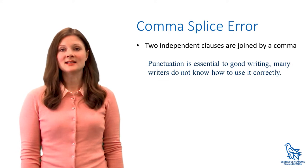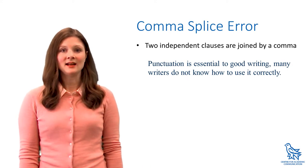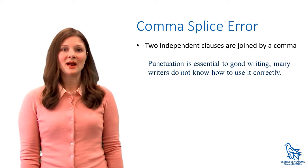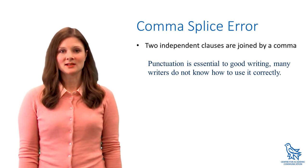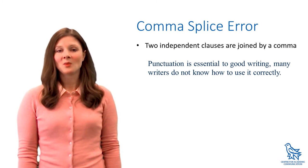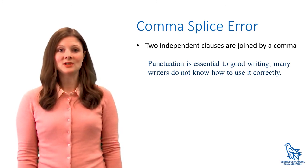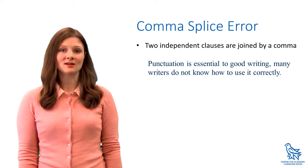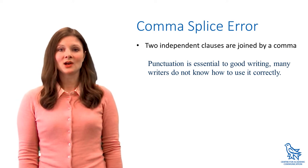A comma-splice error is another type of run-on sentence. Here, there are two independent clauses or complete sentences joined together with just a comma. While this is acceptable structure in many languages, it's not considered grammatically correct in English. There are three ways to correct this issue.